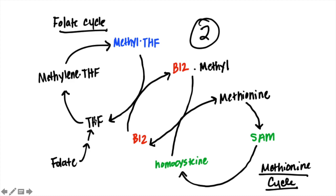B12 and folate aren't important because they directly become essential products, but because they are necessary to transfer methyl groups to homocysteine to create methionine and SAM. SAM is involved in the creation of neurotransmitters. Homocysteine is also involved in the transsulfuration pathway, which produces GSH — an essential reducing factor. So B12 and folate are essential cofactors for generating these downstream molecules.